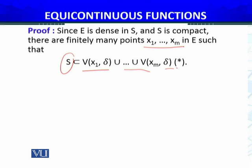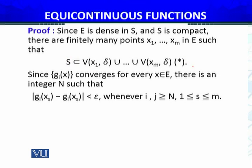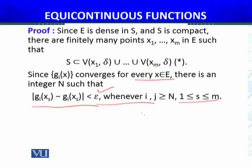Since g_i(x) converges for every x belonging to the countable set E, there is an integer N such that |g_i(x_s) − g_j(x_s)| < epsilon whenever i, j > N, for s = 1 to m. This follows from the definition of convergent subsequences.